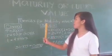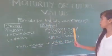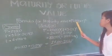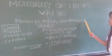And this is the formula for maturity or the future value. Future value is equal to principal multiplied by 1 plus r raised to the time.